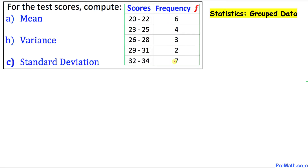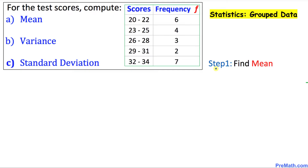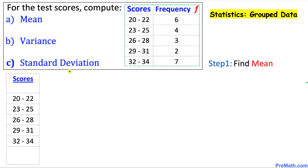Now in our very first step we are going to calculate the mean. I have written down our grouped scores into this very first column, as you can see. These are called grouped scores.